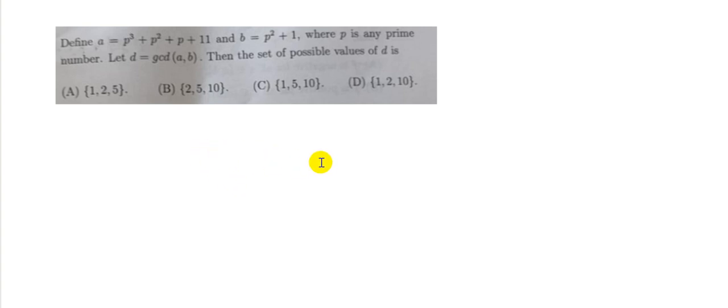The next question says that p is a prime number and two numbers a and b are defined in terms of p where a is p cube plus p square plus p plus 11 and b is equal to p square plus 1. Now since p is prime, so clearly if p is equal to 2, then b is odd and a is also odd. But if p is any other prime number other than 2, that means p has to be odd, then b will become even and a will become even. So that means the only case where a and b are both odd would be when p is equal to 2.